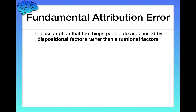Clearly, the situation is a strong determinant of behavior. However, social psychological research shows that people consistently underestimate the power of situational forces on behavior. This error is known as the fundamental attribution error.